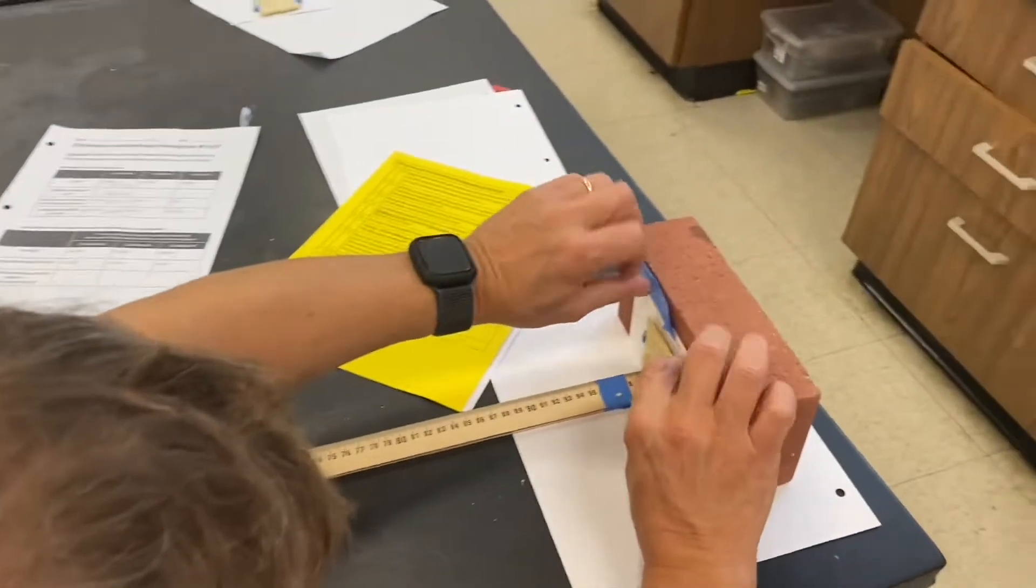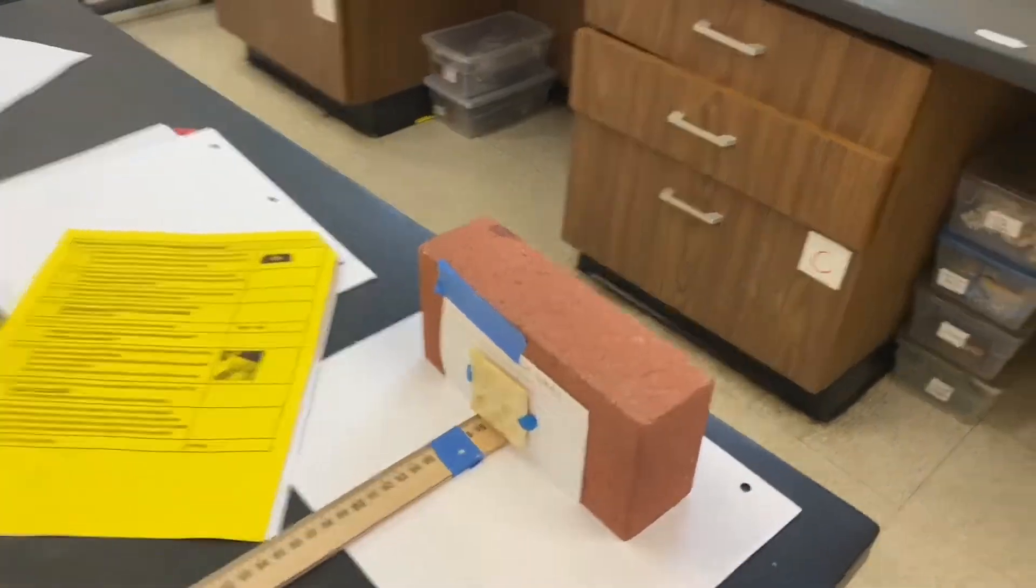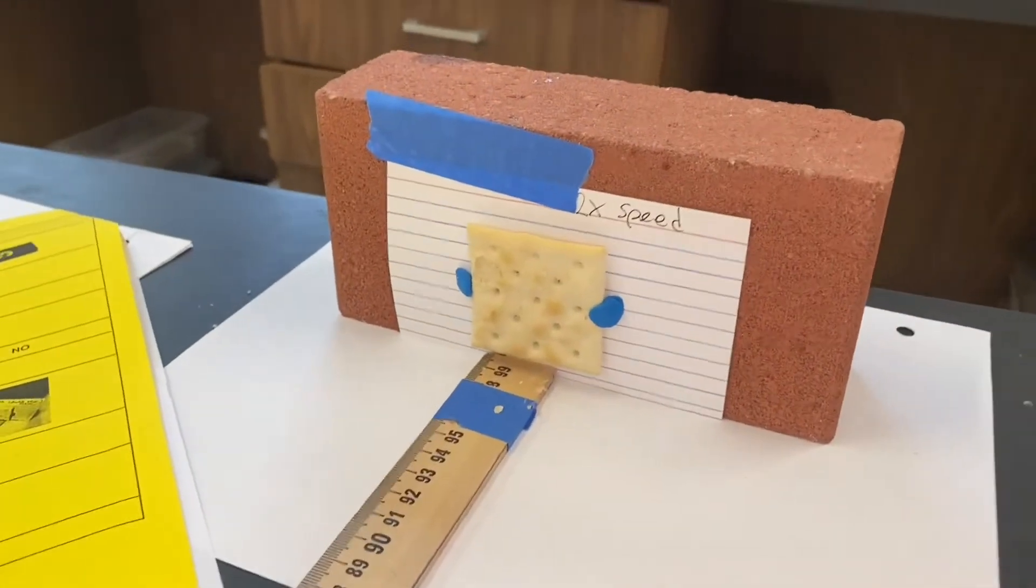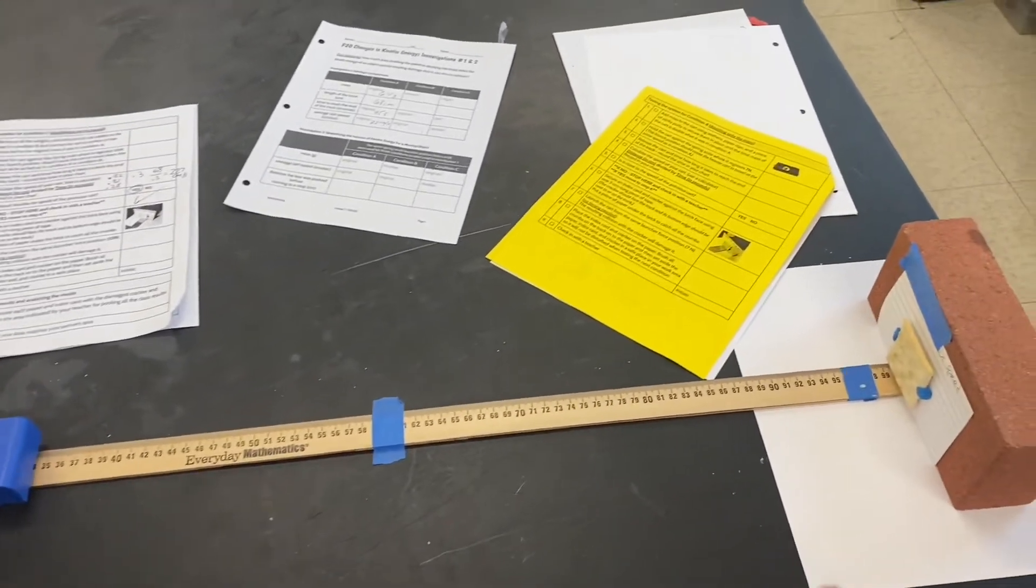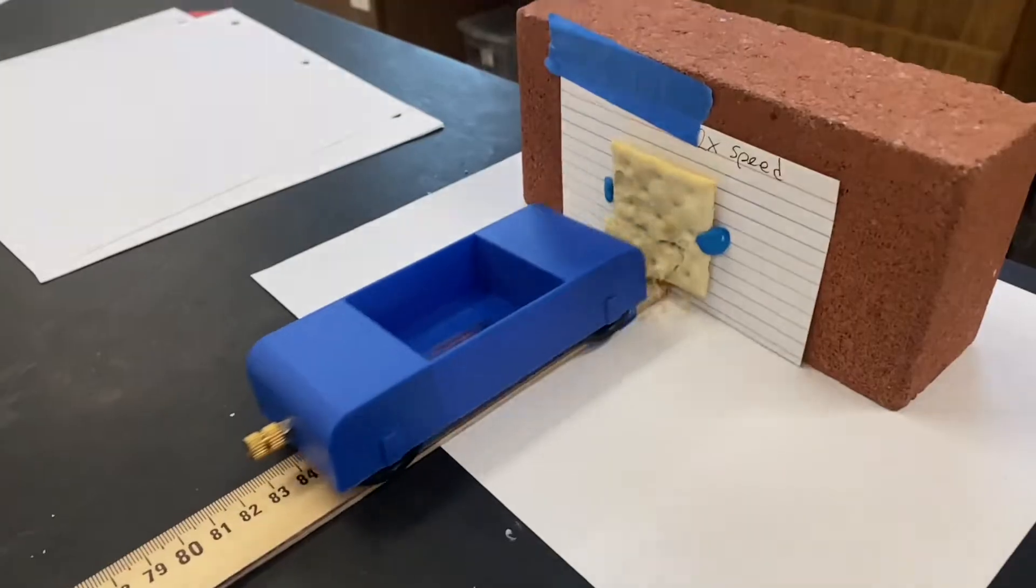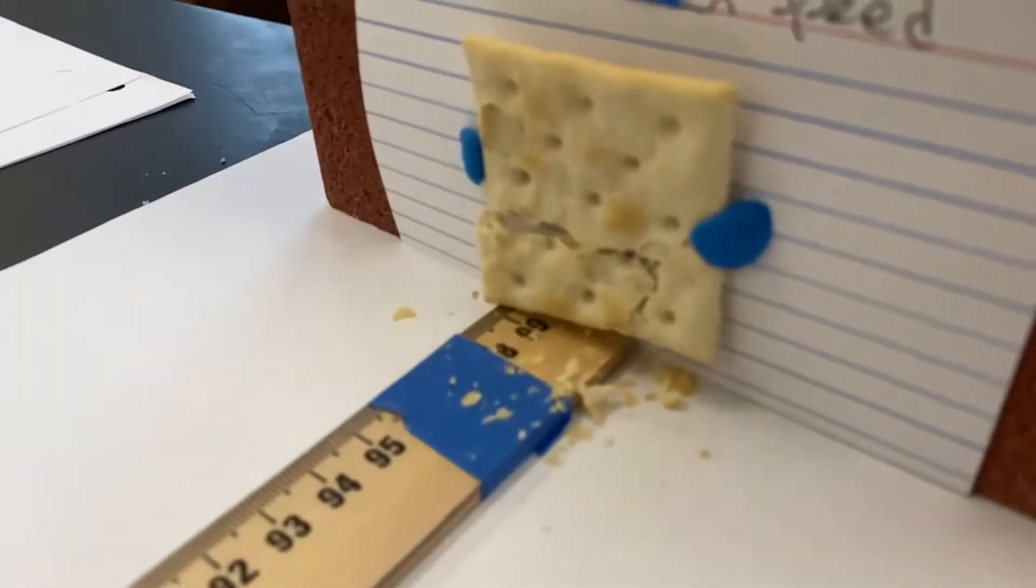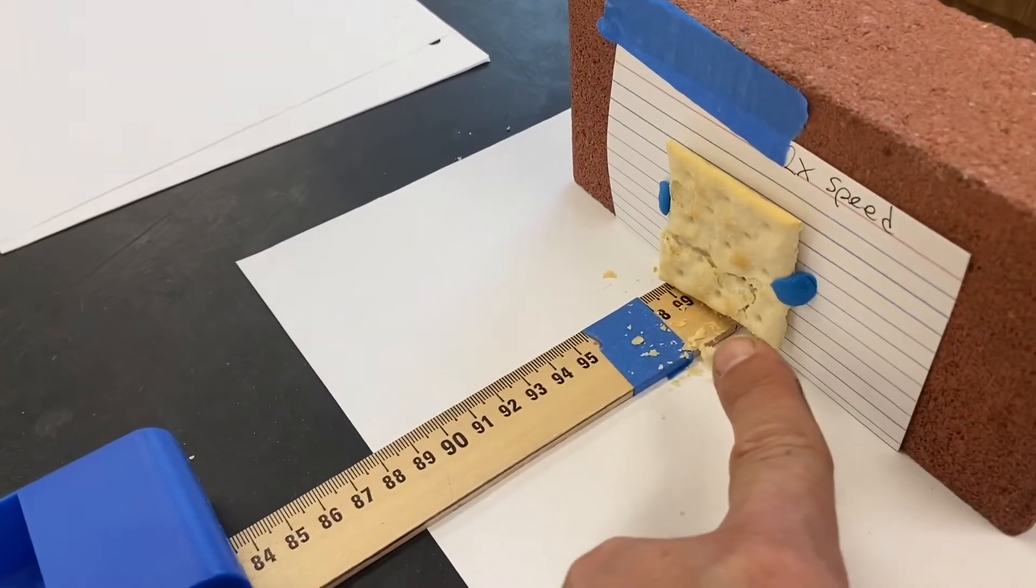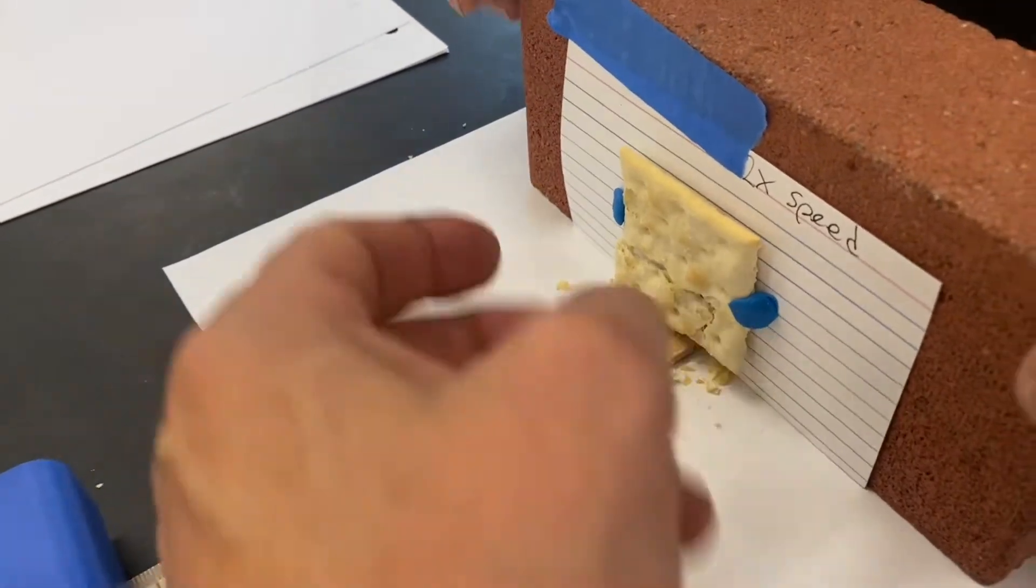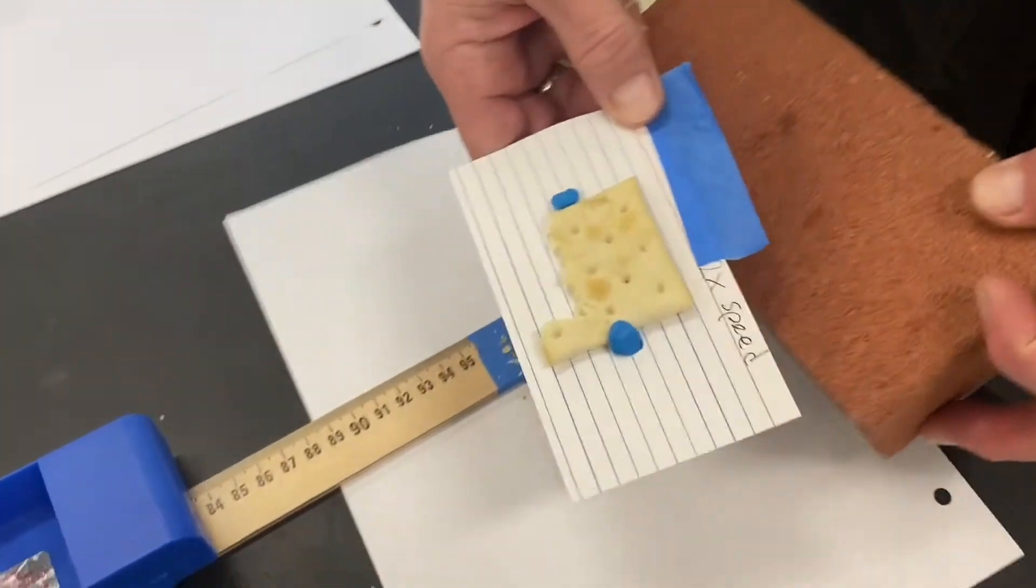So we've established that the car with the original mass is going 2x the speed. So now we're going to test the damage by putting a cracker up there. And we're going to run this car at 2x speed. Let's see what happens. Again, this was original mass and double speed created this much damage. And so we'll take that down carefully and we'll put it next to the other one to compare.